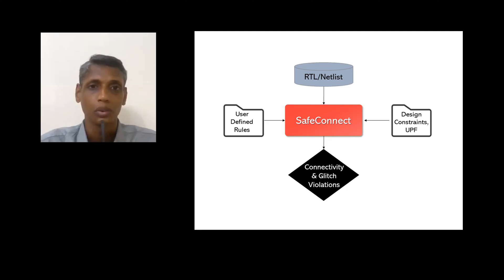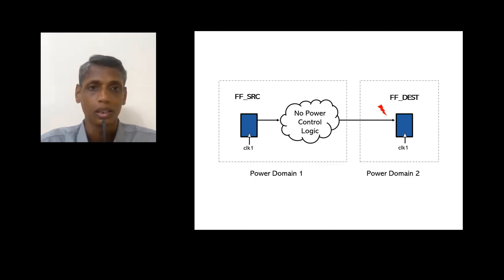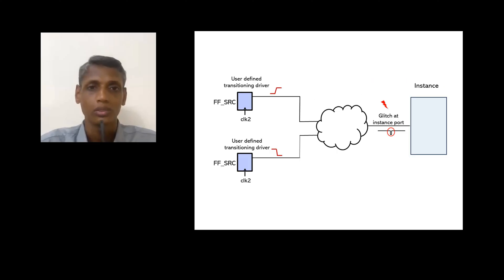I'll share two examples of the bugs we found based on the rules we defined. Rule one was that the connectivity from source to destination must be in the same power domain. SafeConnect filtered out paths containing isolation cells or level shifters, and identified all paths where the source and destination were in different power domains without any power control. Rule two was that no glitch should reach the input pin of any instance in the design. SafeConnect found and reported all input pins for which the drivers converge to cause a glitch.